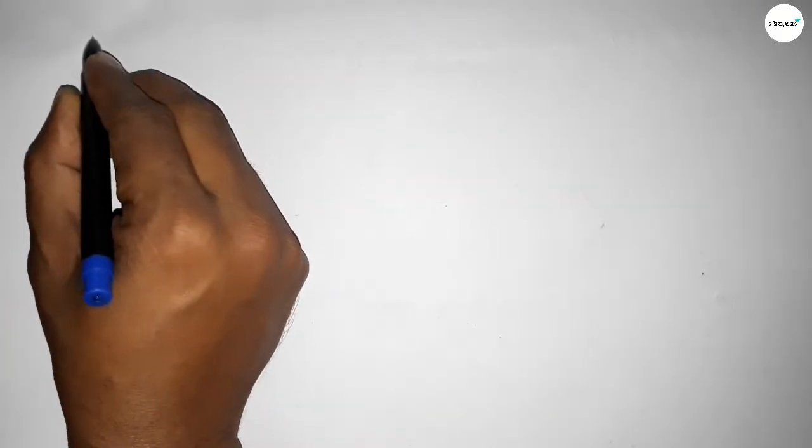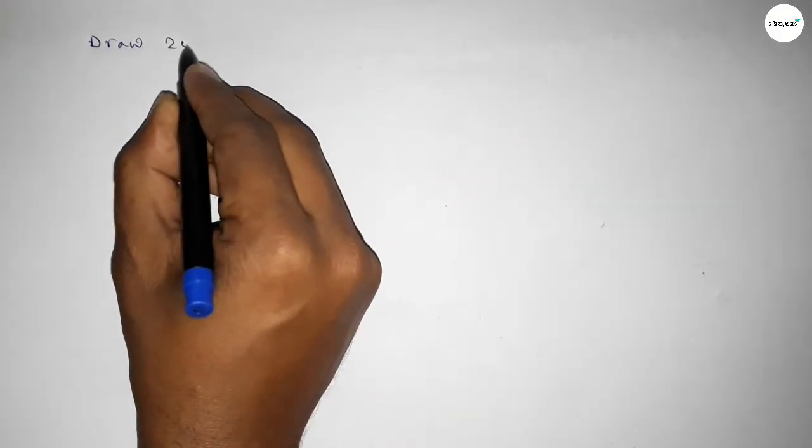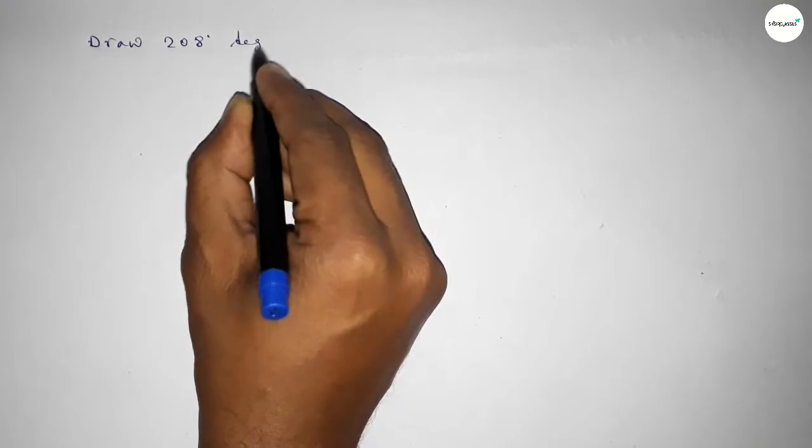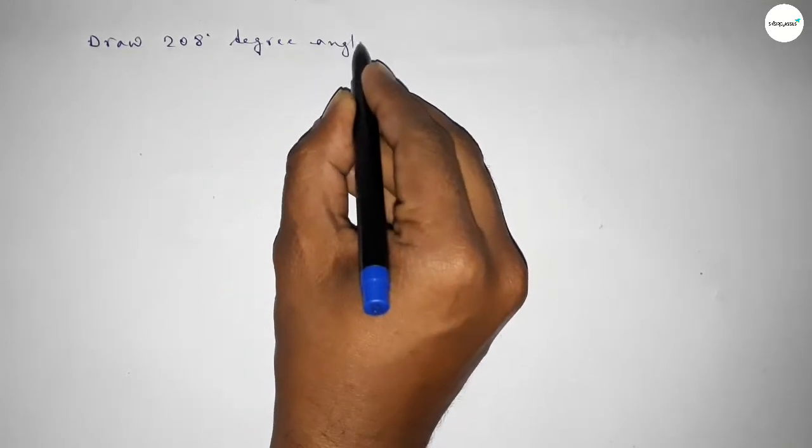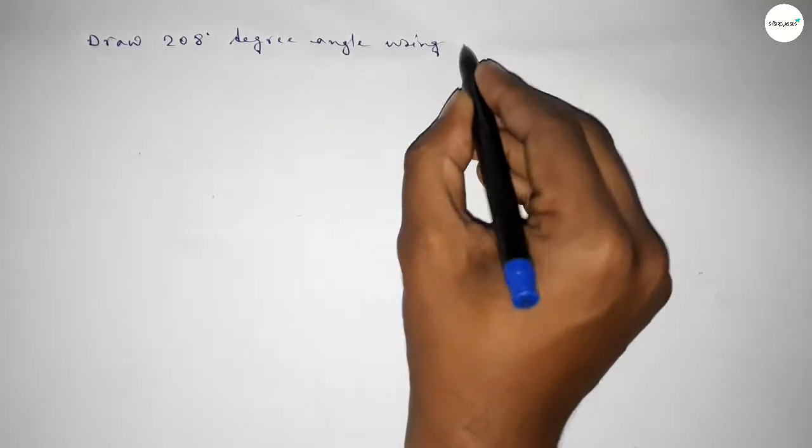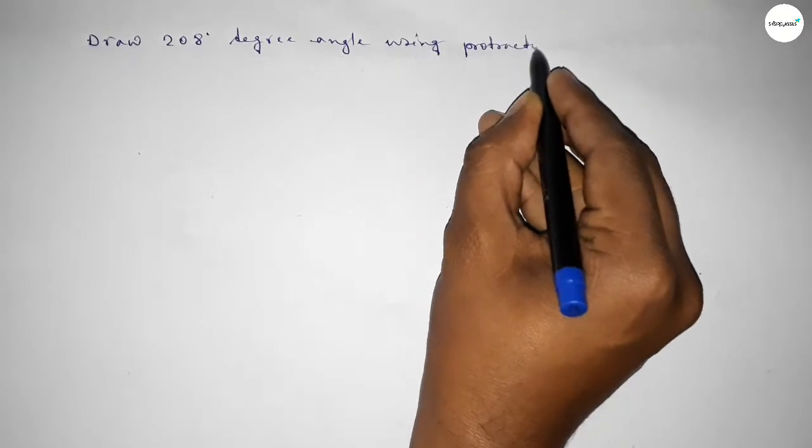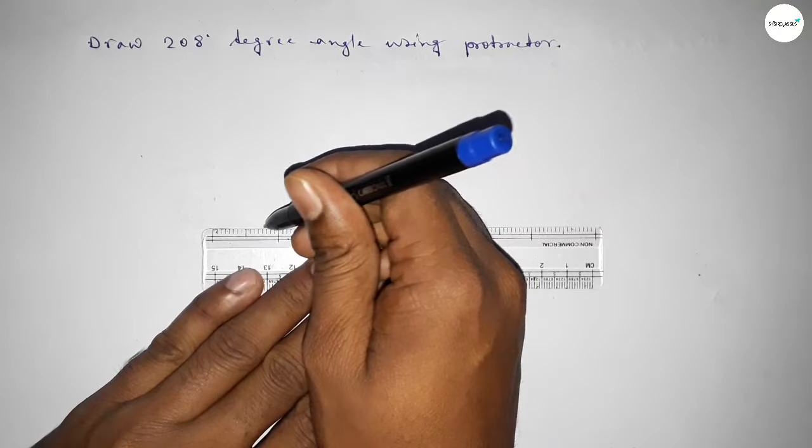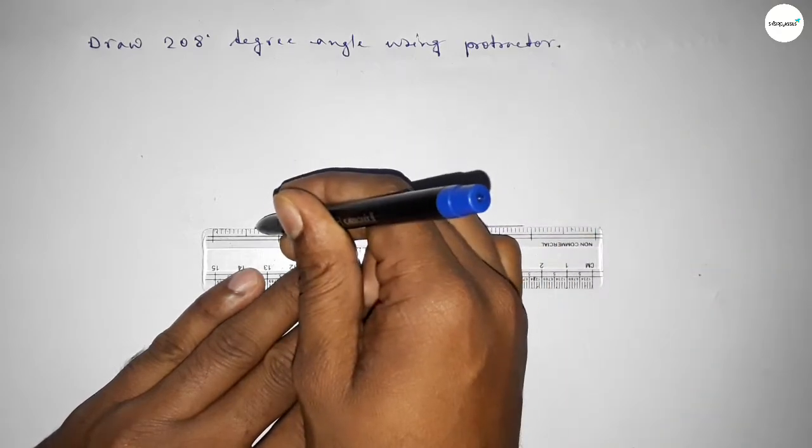Hi everyone, welcome to SI Share Classes. Today in this video we have to draw a 208 degree angle by using a protractor. Let's start the video. First of all, we have to draw here a straight line of any length.